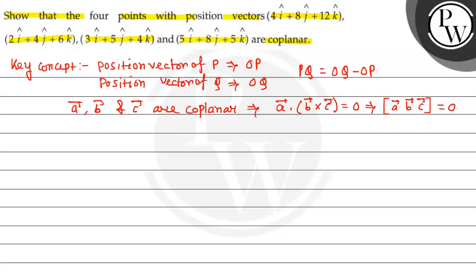Now we will find the position vectors. For position vectors, OA vector is given as 4i + 8j + 12k, and OB vector is 2i + 4j + 6k.